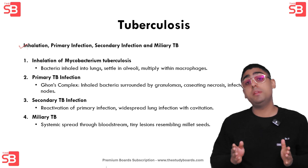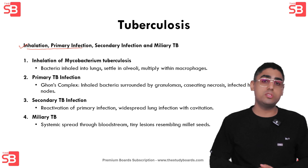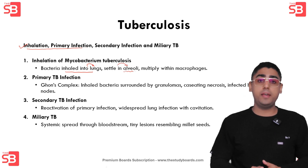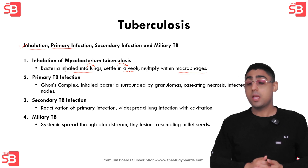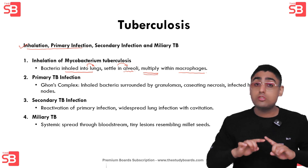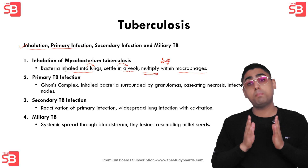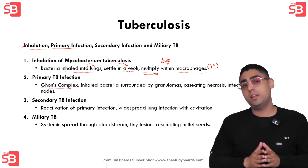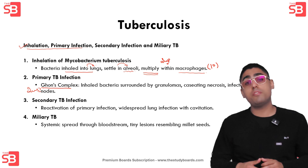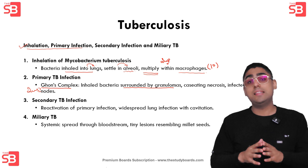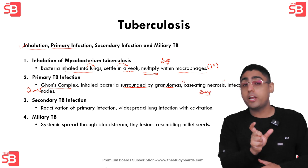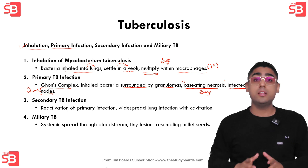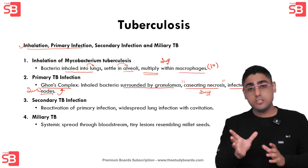TB infection begins when Mycobacterium tuberculosis is inhaled into the lungs. The bacteria settles into the alveoli, where it is engulfed by macrophages — but instead of being destroyed, it multiplies within the macrophages, resulting in primary TB infection. The primary site of infection in the lung is called the Ghon focus, which consists of inhaled bacteria surrounded by granulomas undergoing caseating necrosis — important: the necrosis type is caseating. The infected hilar lymph nodes draining this lesion form the Ghon complex.